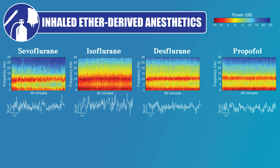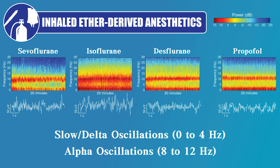When delivered at surgical levels for general anesthesia, the inhaled ether-derived anesthetics produce slow delta and alpha oscillations in the EEG. This similarity to propofol suggests that the dominant mechanism of action, meaning enhanced GABAergic inhibition, may be the same for both the inhaled ether-derived anesthetics and propofol.